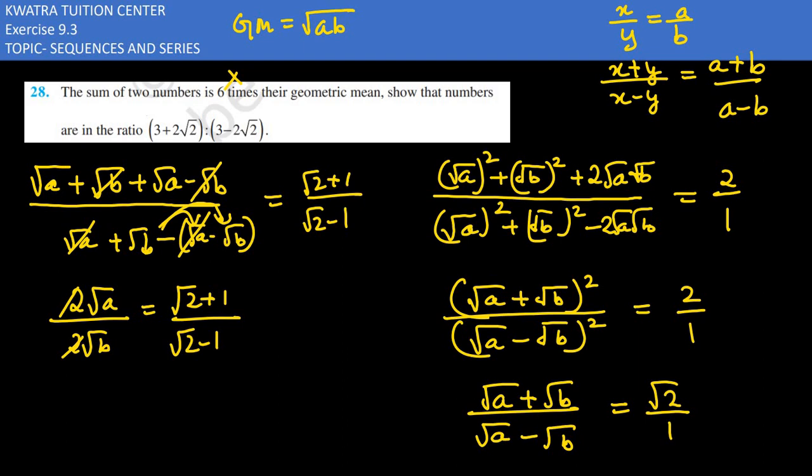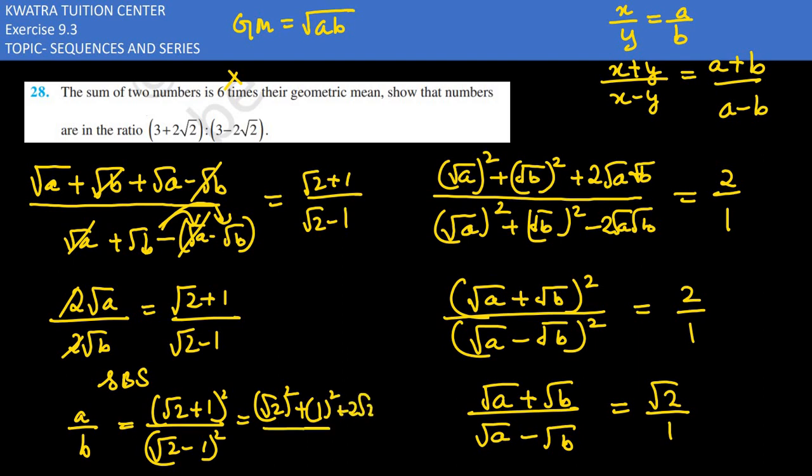You can see that answer is not the same, so just one step left: squaring both sides. Left side (√a/√b)² = a/b. Right side ((√2 + 1)/(√2 - 1))².